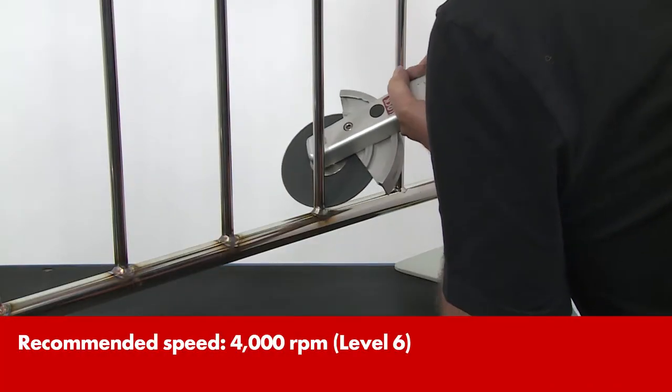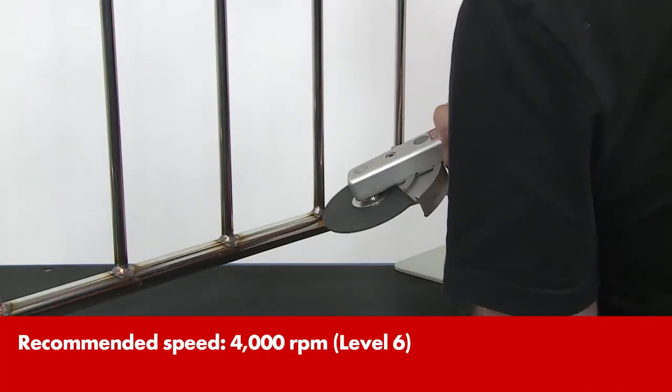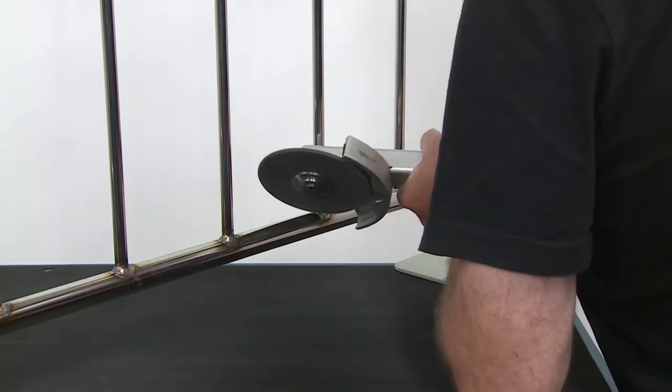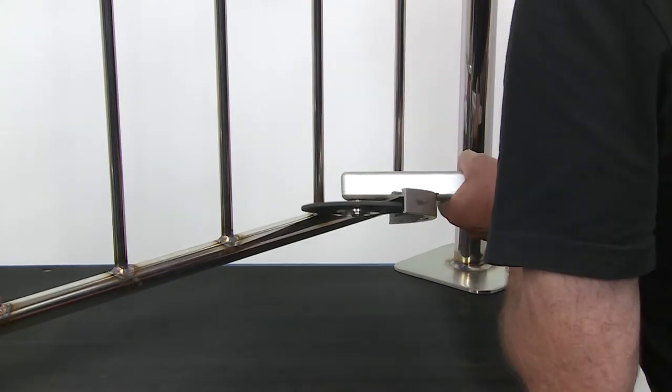Remove the weld seam with this. Make sure the disc is kept directly over the weld seam. In this way, you prevent the formation of any hollows which cannot then be polished out.